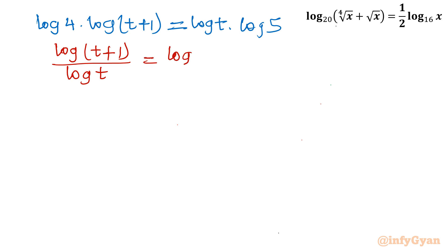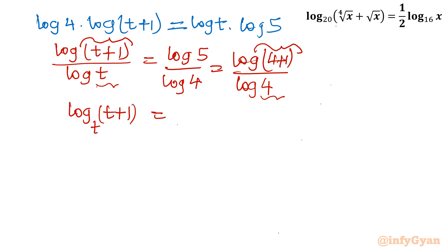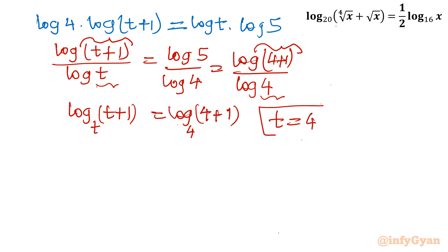Notice that log 5 / log 4 = log(4+1) / log 4. By comparing both sides — numerators and denominators — we can conclude t = 4. So the obvious answer comes from direct comparison: t equals 4. But we ask: is this the only solution possible?